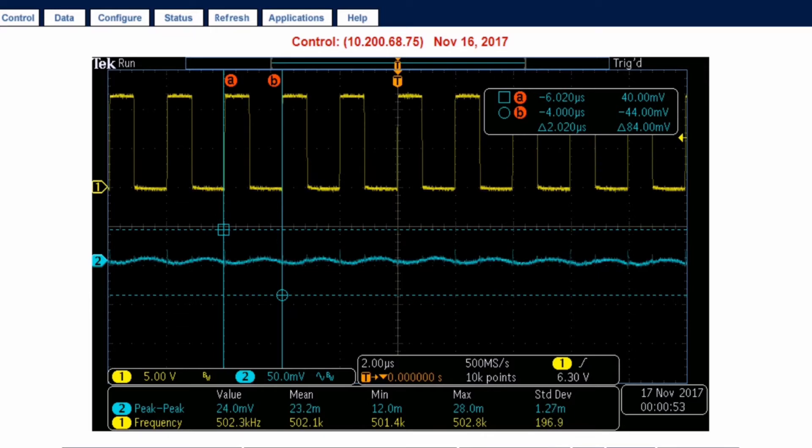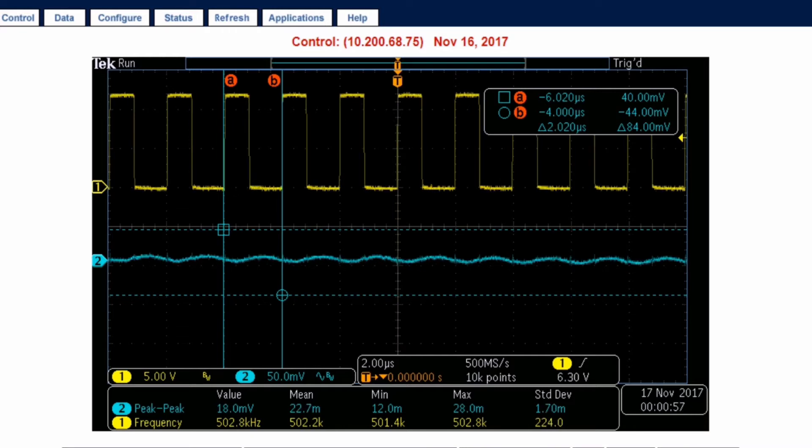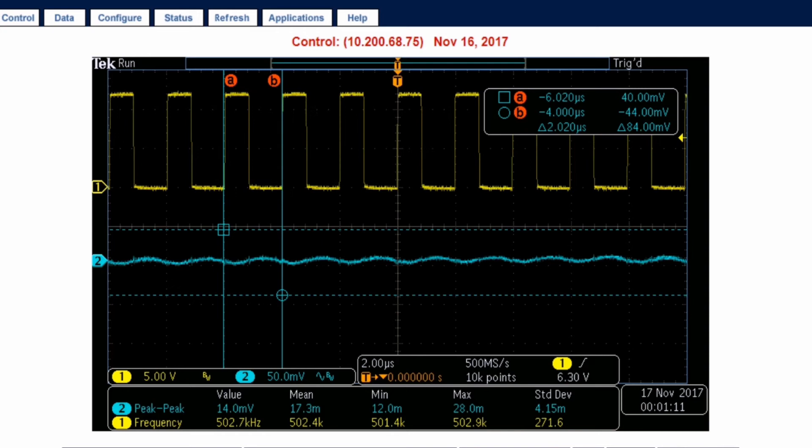Now I am reducing the load current slightly from 1 amp down to no load, from 0.9, 0.8, all the way to 0 amps. But here you can see, even at no load, there is not much effect on the PWMs nor on the peak-to-peak ripple.